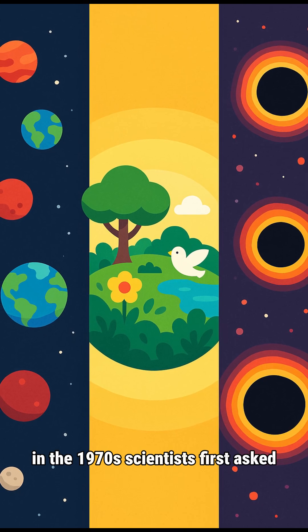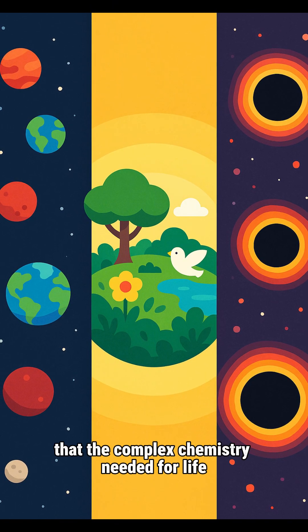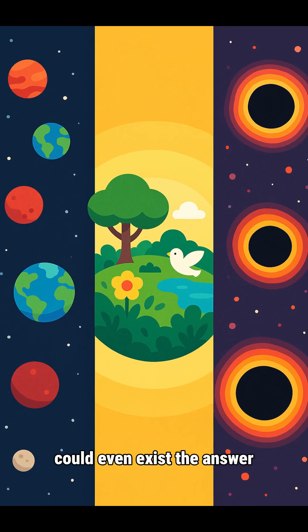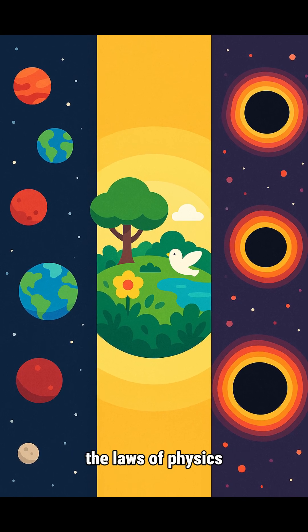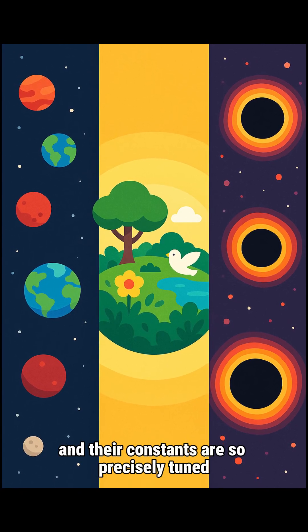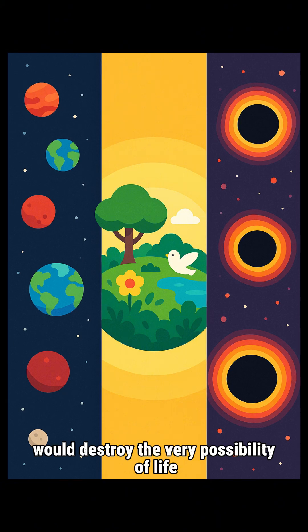In the 1970s, scientists first asked, what is the probability that the complex chemistry needed for life could even exist? The answer? The laws of physics and their constants are so precisely tuned that even the slightest deviation would destroy the very possibility of life.